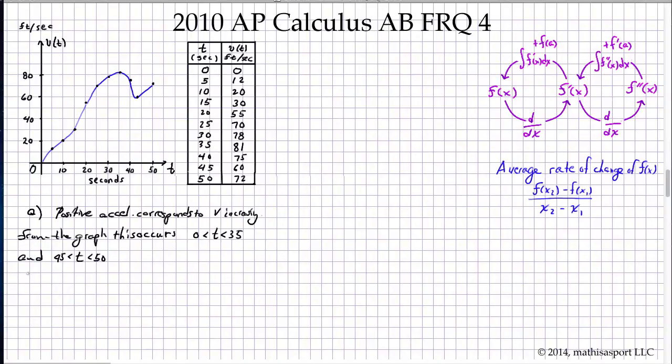Part B asks us to find the average acceleration of the car over the interval. So average acceleration here is the average rate of change of velocity. Let's write that out: average rate of change of the velocity.